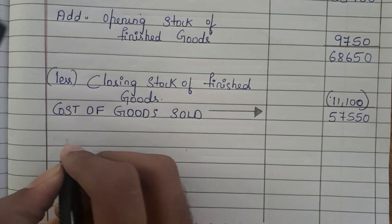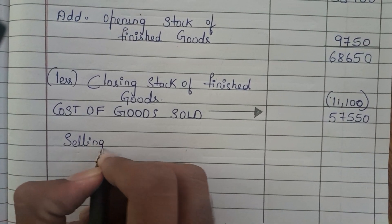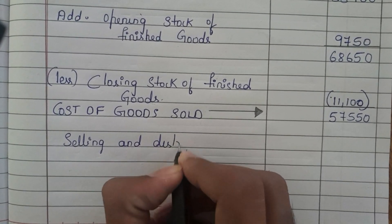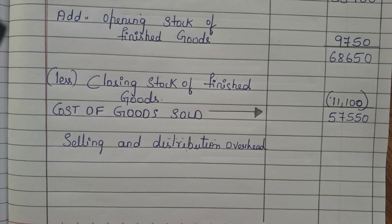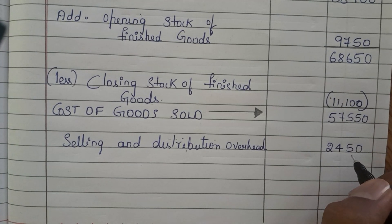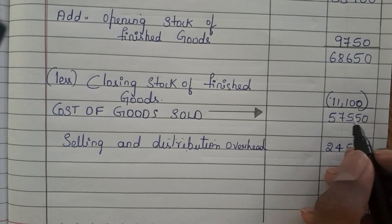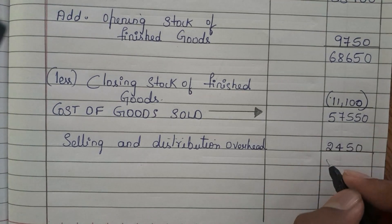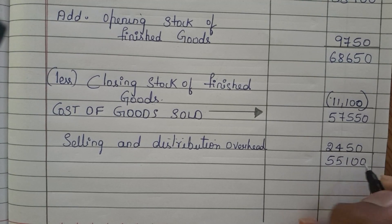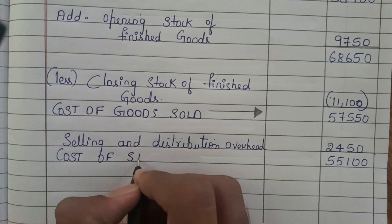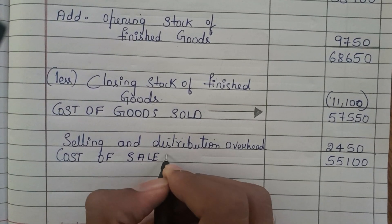Our last procedure is to add selling and distribution overhead. Selling and distribution overheads are directly given in the question as 2,450. Adding 2,450 to 57,550, we get 60,000. This is our cost of sales — 60,000 rupees.